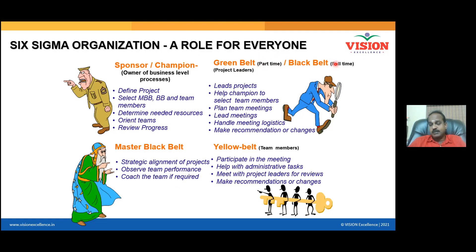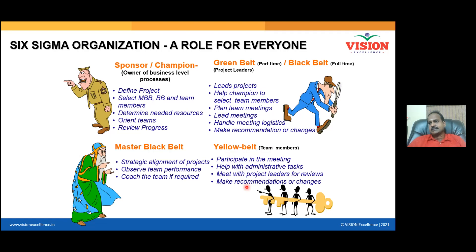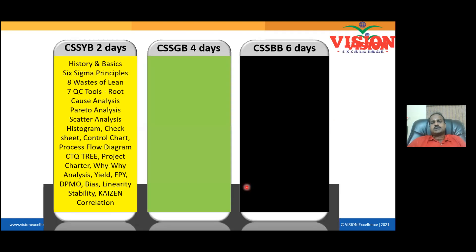Black Belts are full-time project leaders. They lead projects, help the champion to select team members, plan and lead team meetings, handle meeting logistics and communication, and make recommendations for changes. Team members participate in meetings, help with administrative tasks, meet with project leaders, and can be used for data collection and other things.